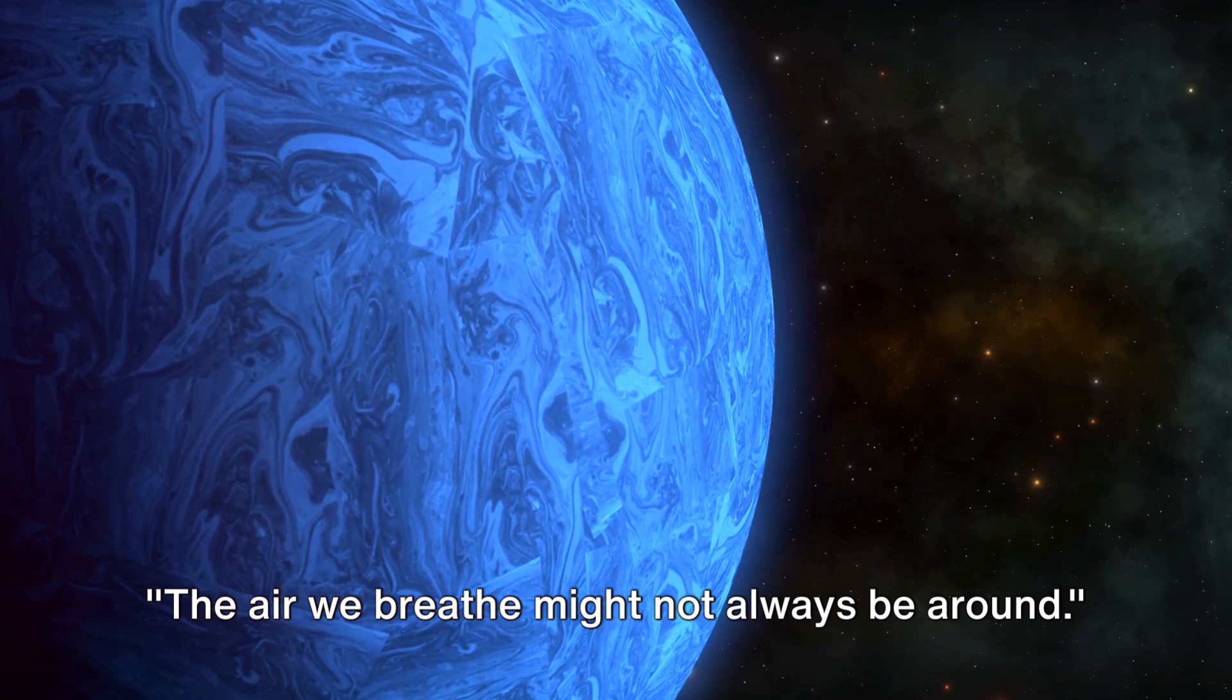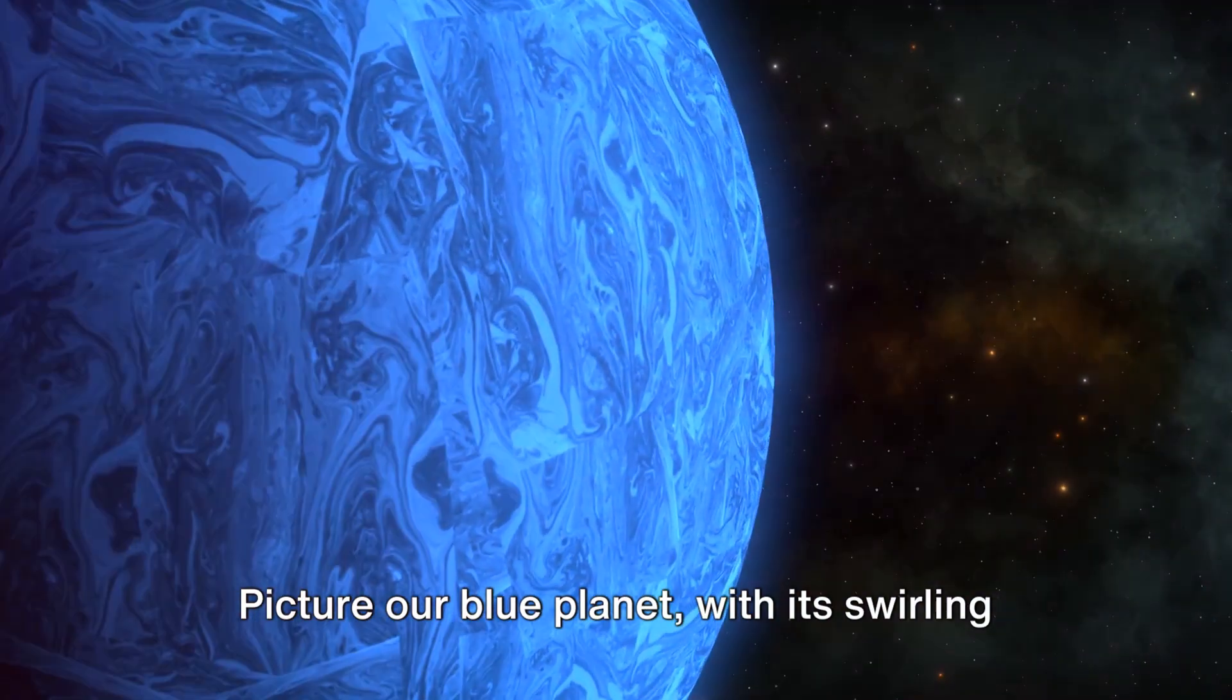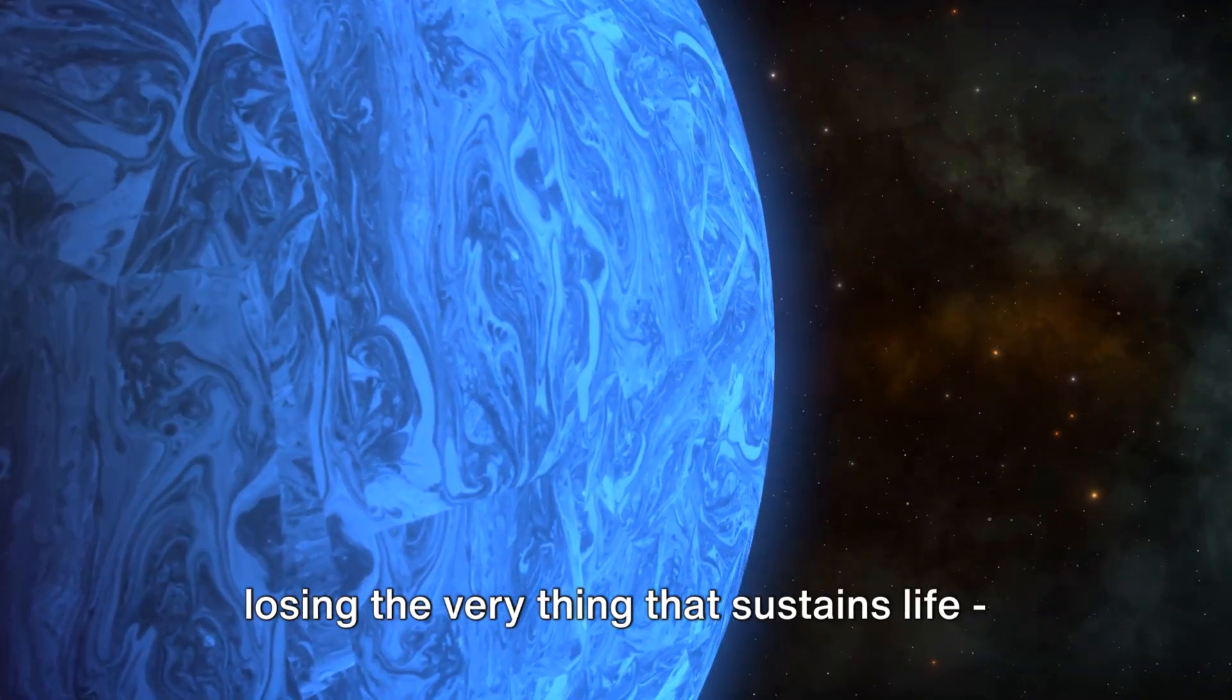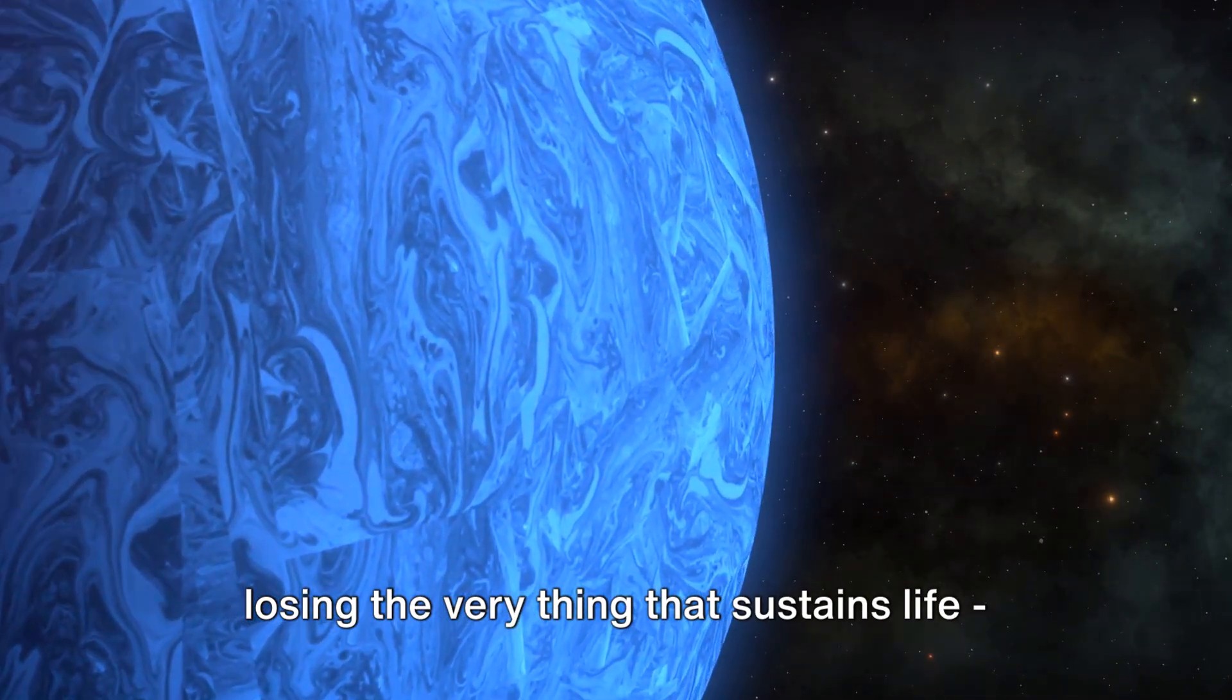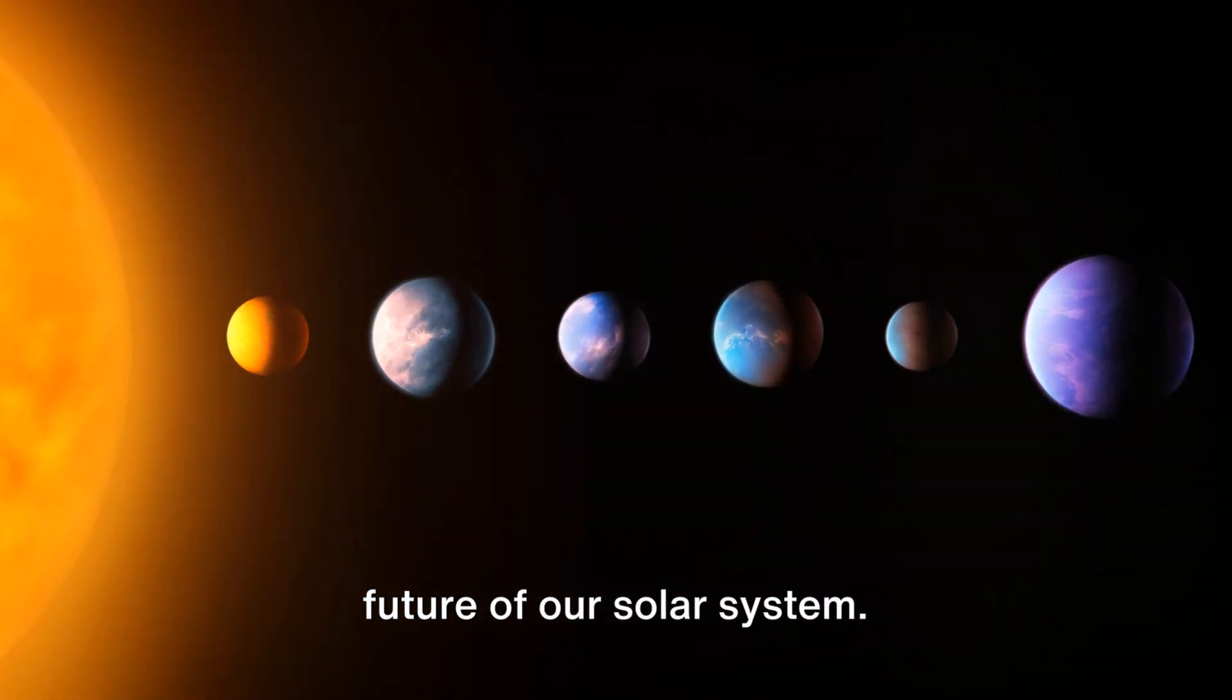The air we breathe might not always be around. It's a chilling thought, isn't it? Picture our blue planet, with its swirling clouds and vibrant landscapes, gradually losing the very thing that sustains life, its atmosphere. This is the seventh theory about the future of our solar system.